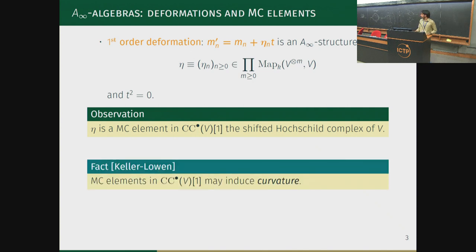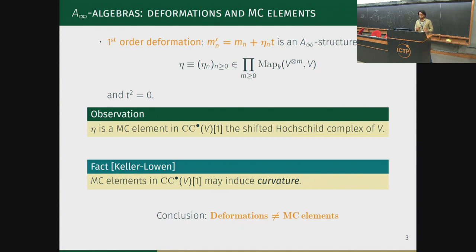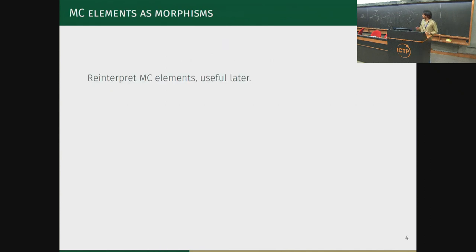The problem comes from the observation that Maurer-Cartan elements may induce curvature. Even if we start with an uncurved A-infinity algebra (m_0 = 0), one cannot always guarantee that m_0' is also zero. For this reason, deformations are not the same as Maurer-Cartan elements—there is an obstruction to describing deformations in terms of Maurer-Cartan elements, which is basically the presence of curvature. That is the main point of the talk.